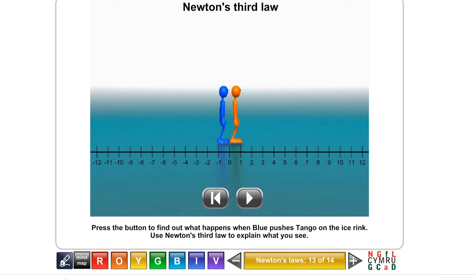So here we have our friends helping us to understand Newton's laws. Blue, as it says here, we're going to press the button to find out what happens when blue pushes tango on the ice rink. Let's give it a whirl. There we are. Naughty blue pushing tango. And you can see they move apart at the same speed. They're going to be the same mass, same force applied, therefore they'd have the same acceleration. Action: blue on tango. Reaction: tango on blue.